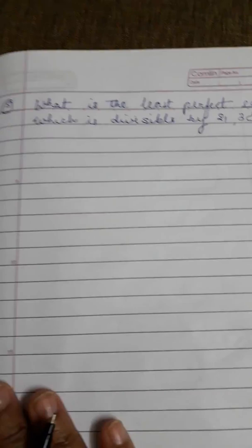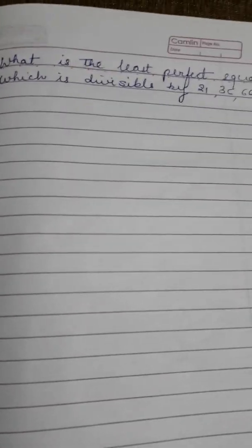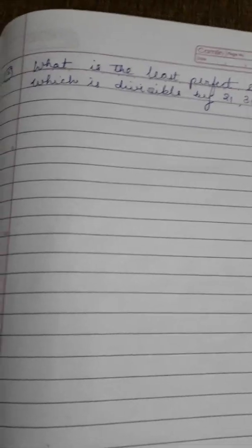Question number 5: What is the least perfect square number which is divisible by 21, 36, and 66? Here we need to find the perfect square. First understand what is a perfect square.